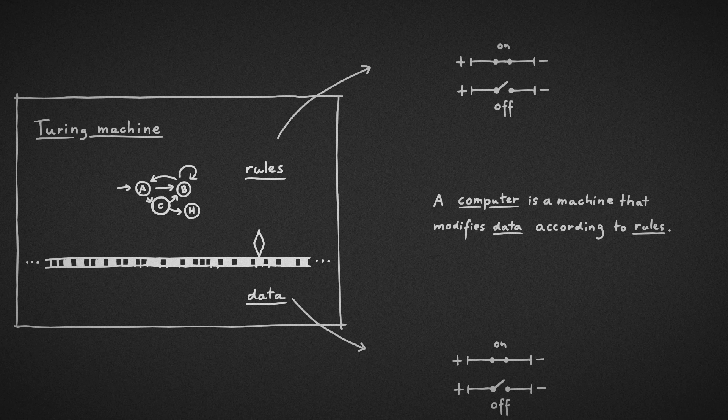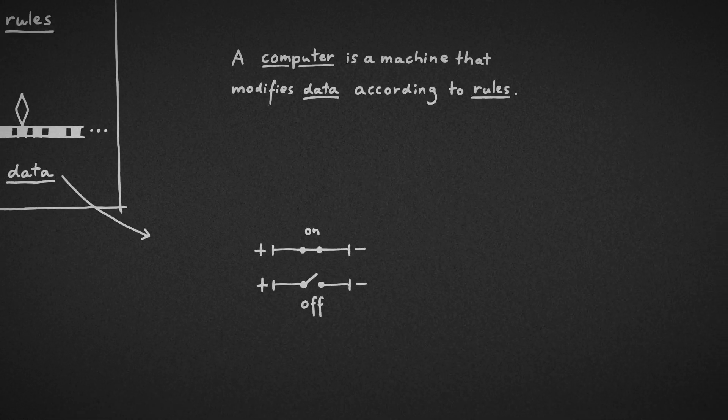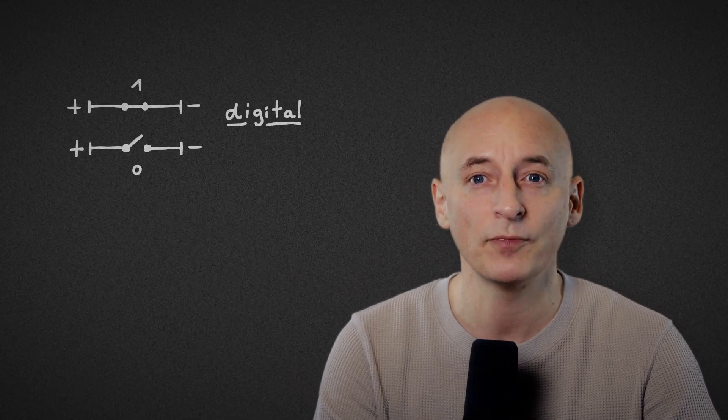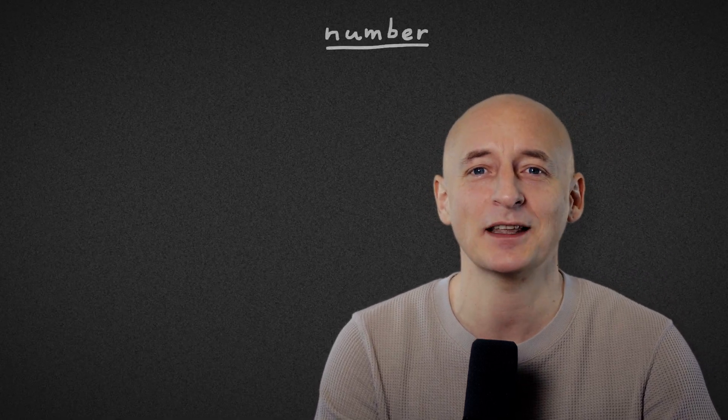To make this work, we're going to use a simple yet powerful trick. We refer to our two states, on and off, as digits – one and zero. Then we can express almost any type of data as numbers. Let me show you how it's done.